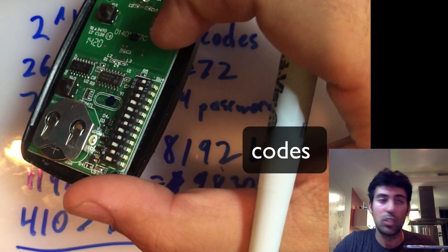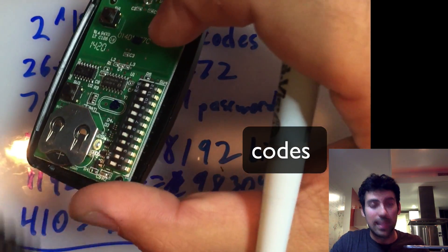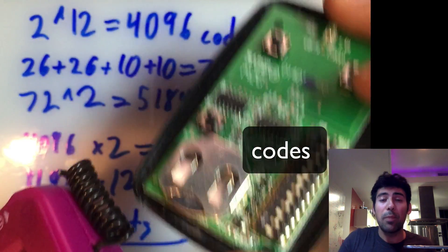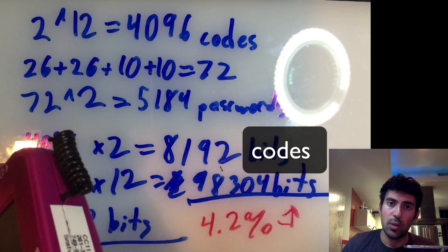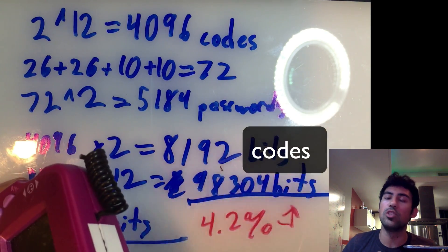So you can stand outside of a garage, use the IMME, hit the space bar, every possible code will be sent overlapping, and in under 10 seconds the garage will open, without having any predetermined knowledge about the code.